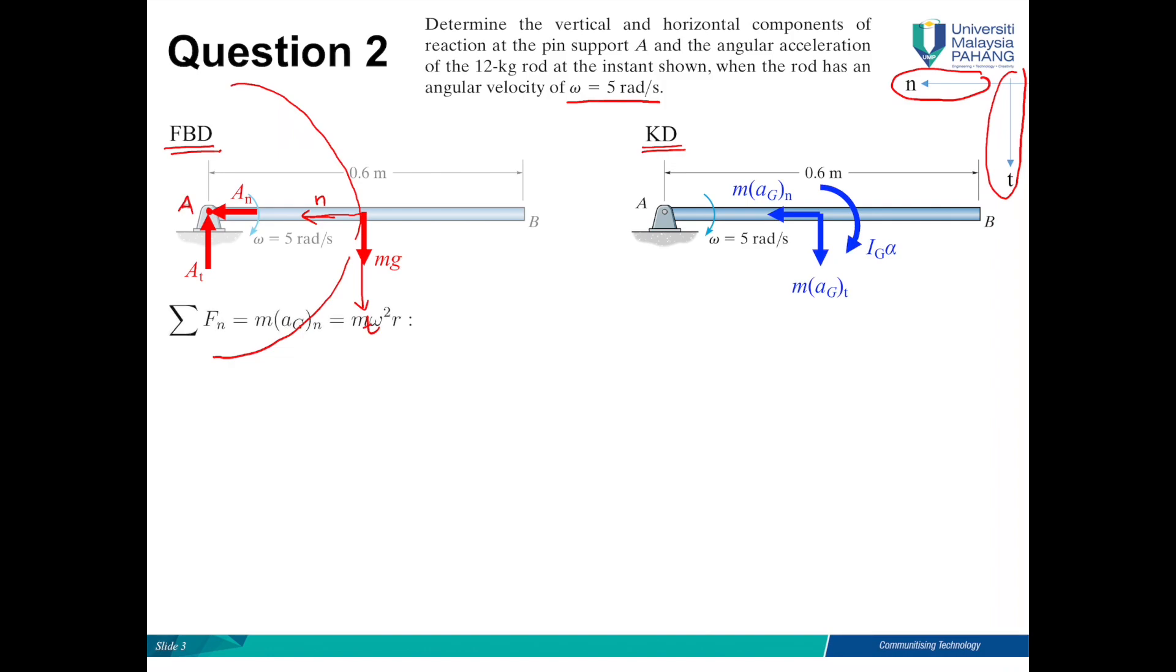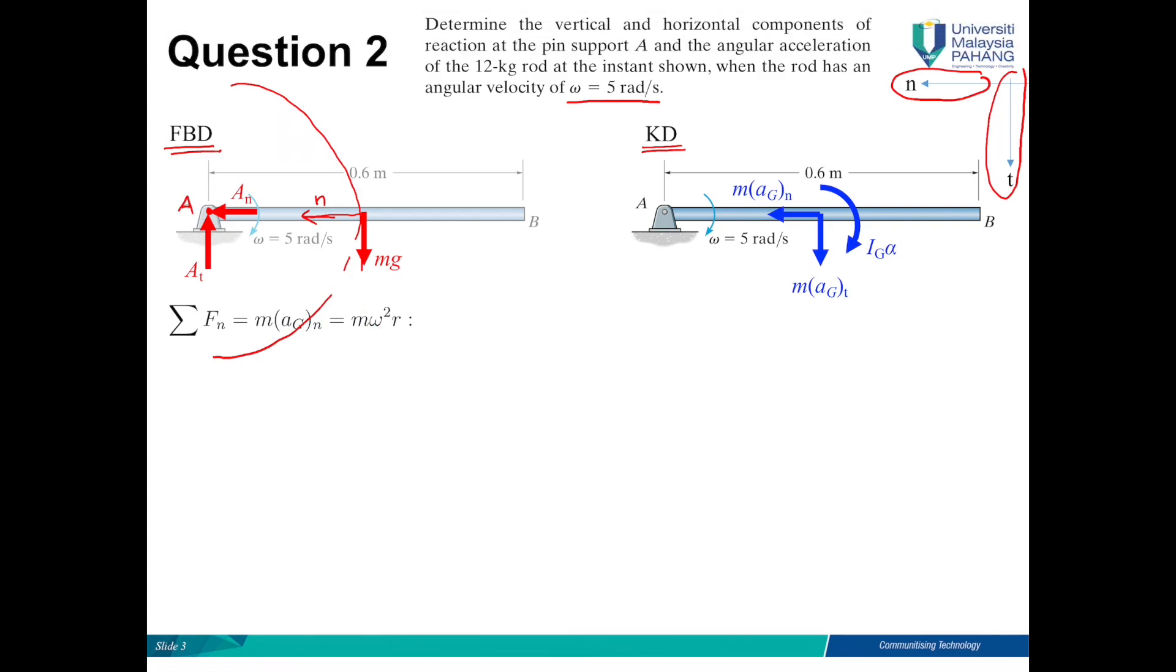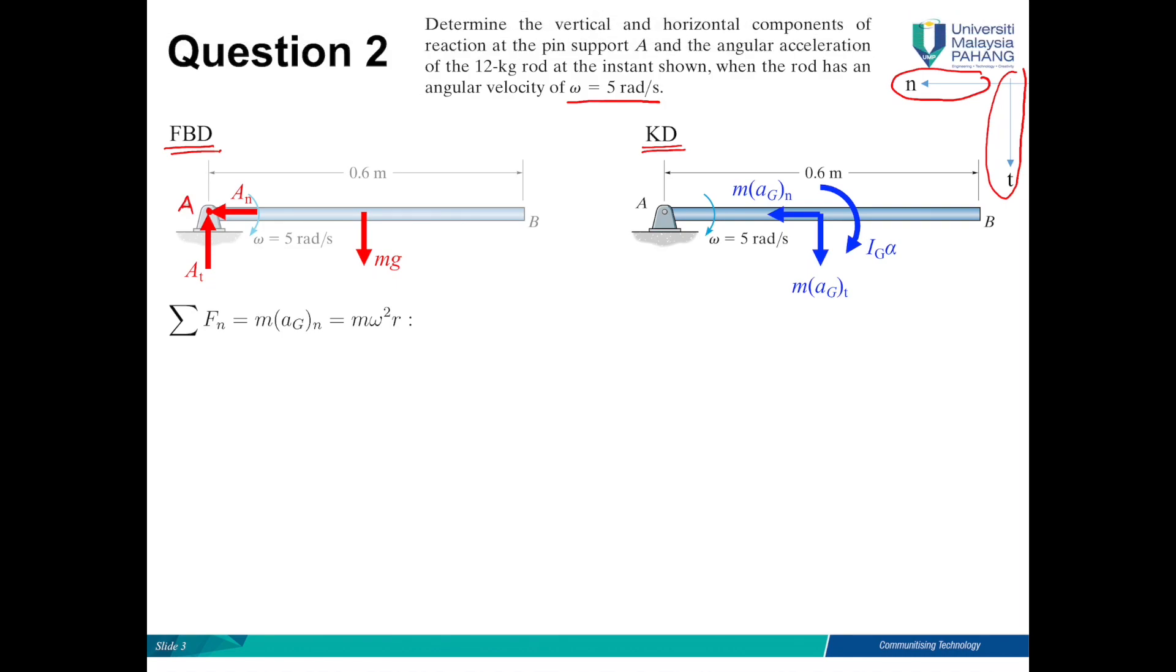So we will start with the first equation, that is normal forces. Sum of Fn equals M omega squared R.